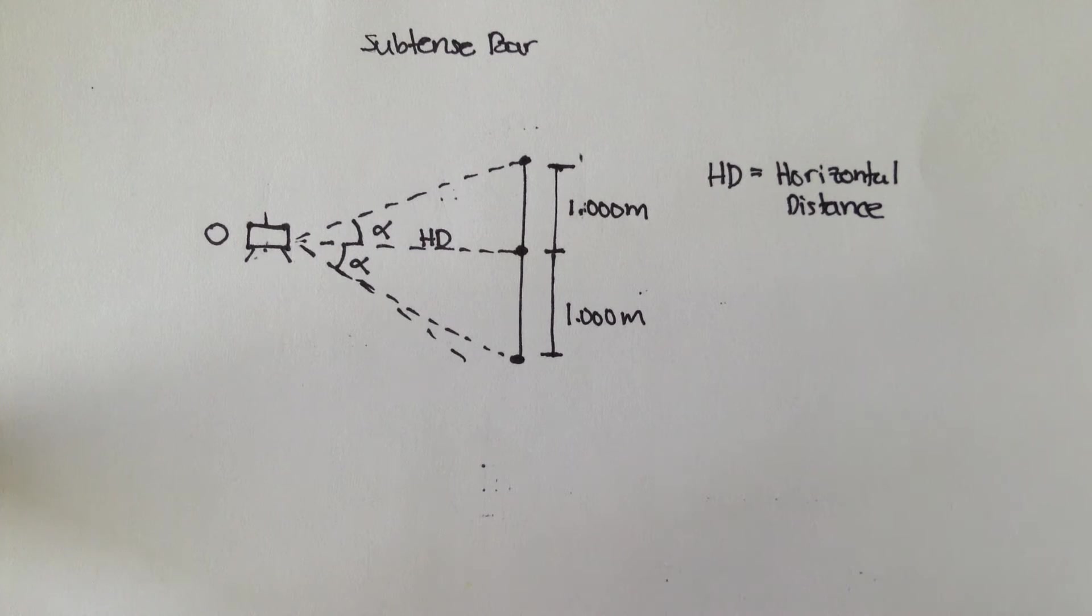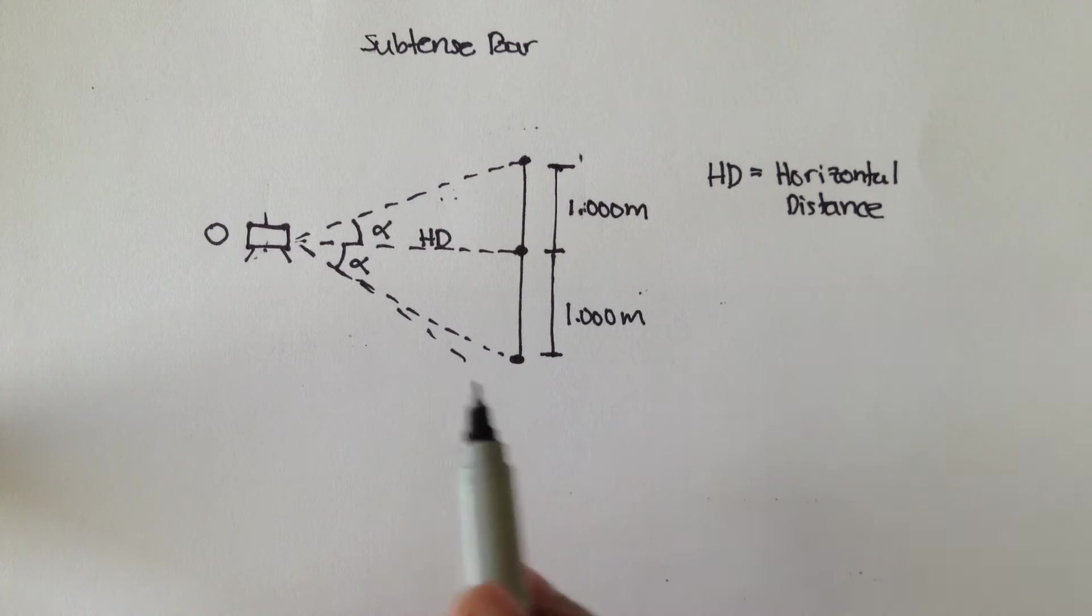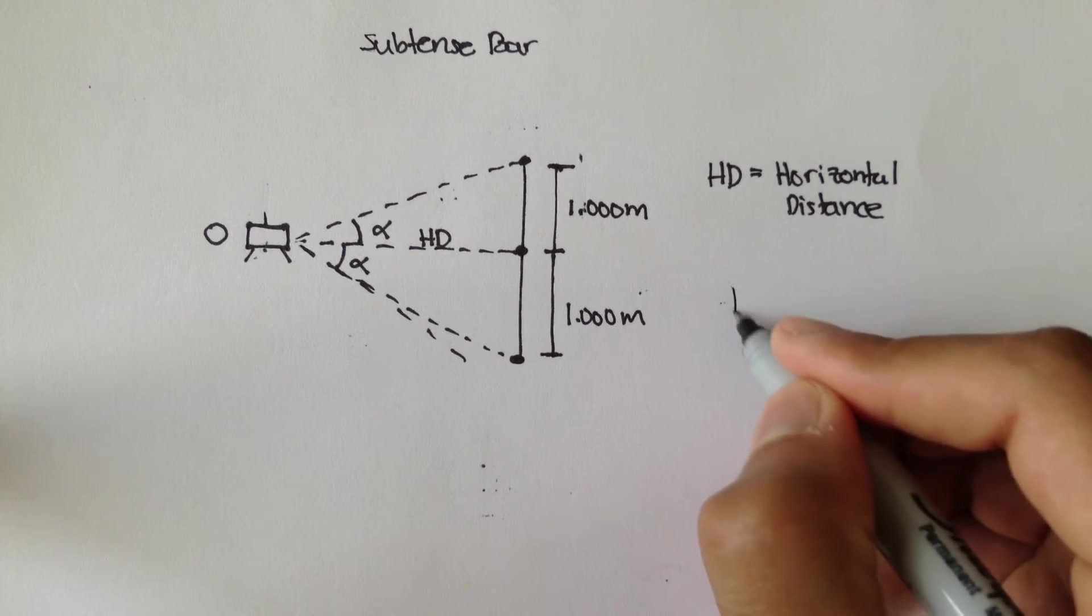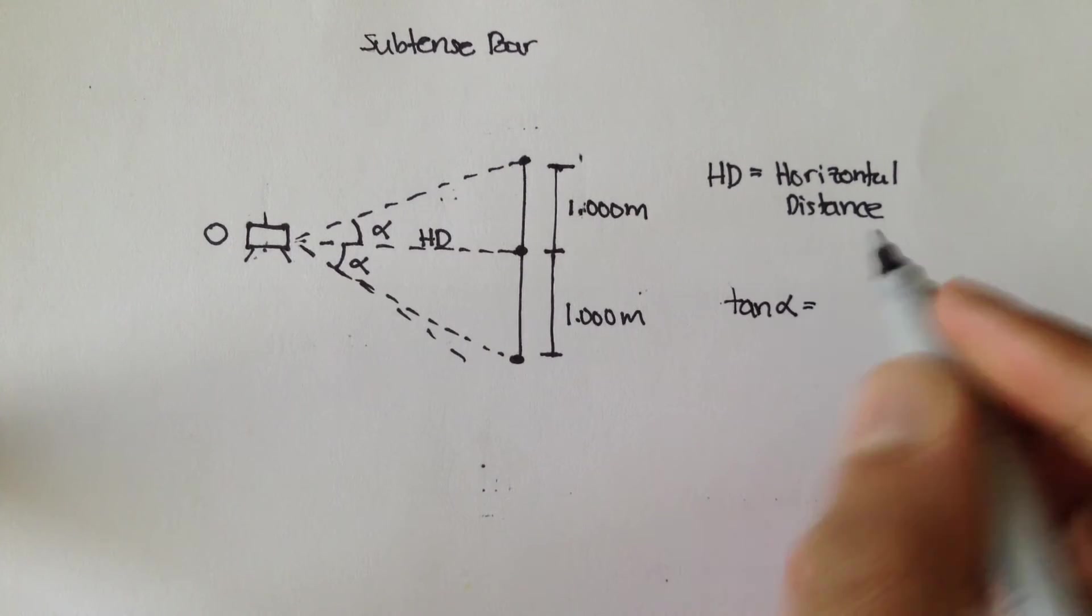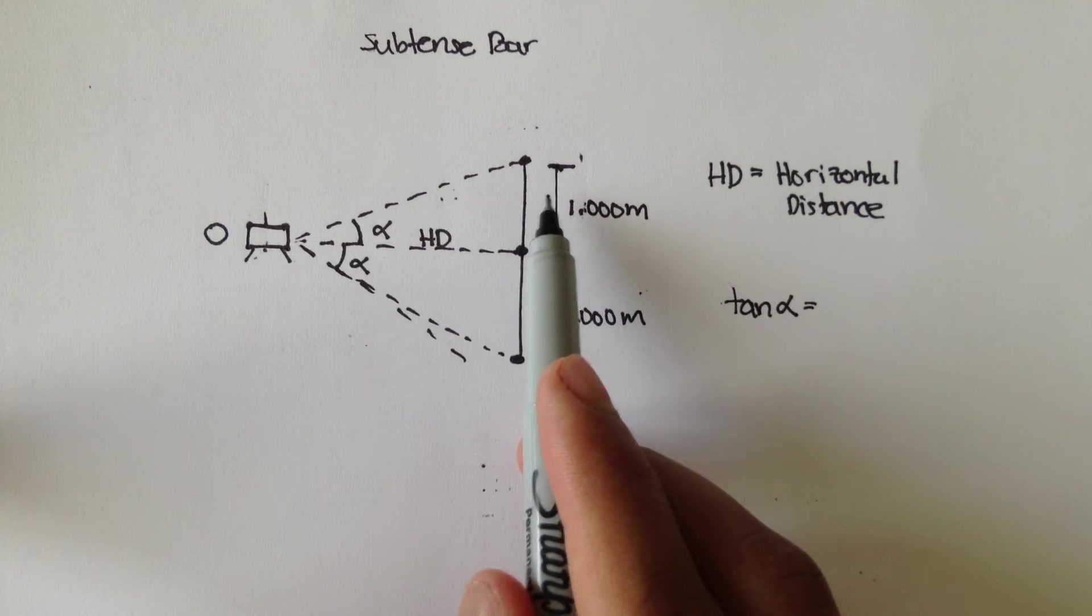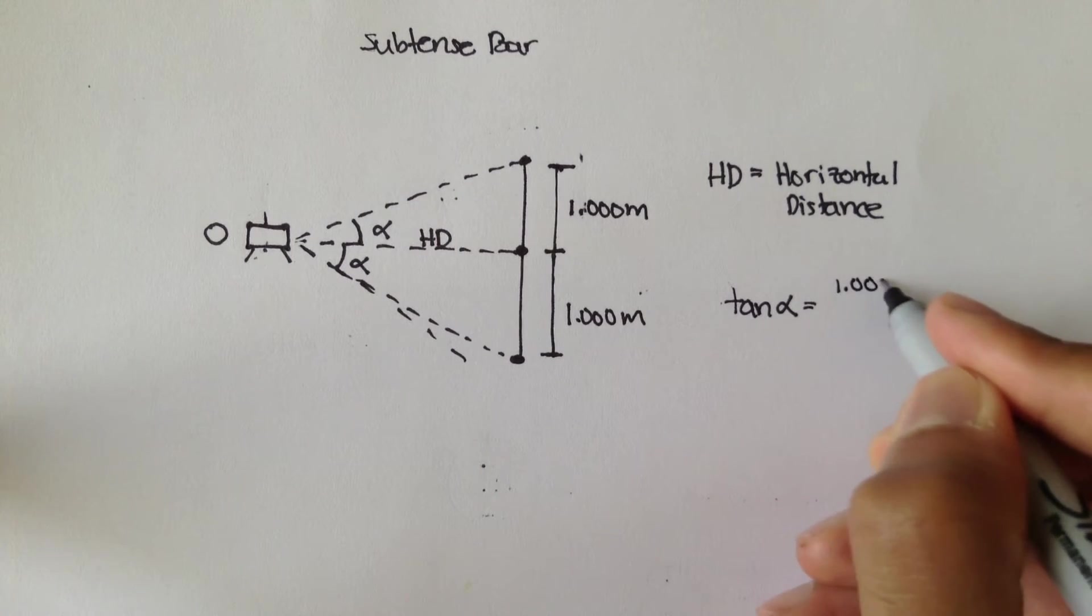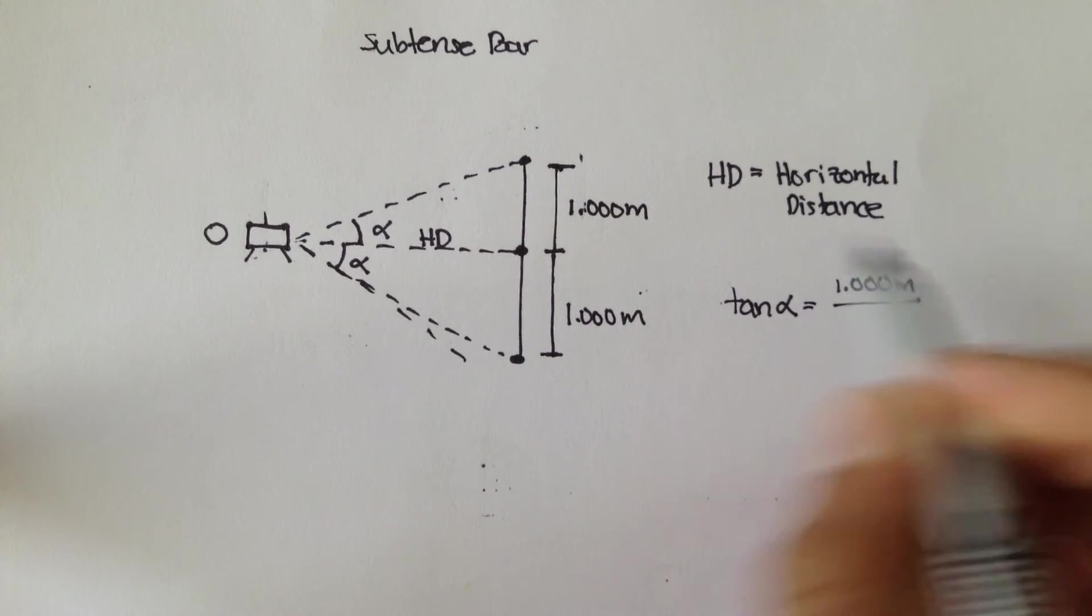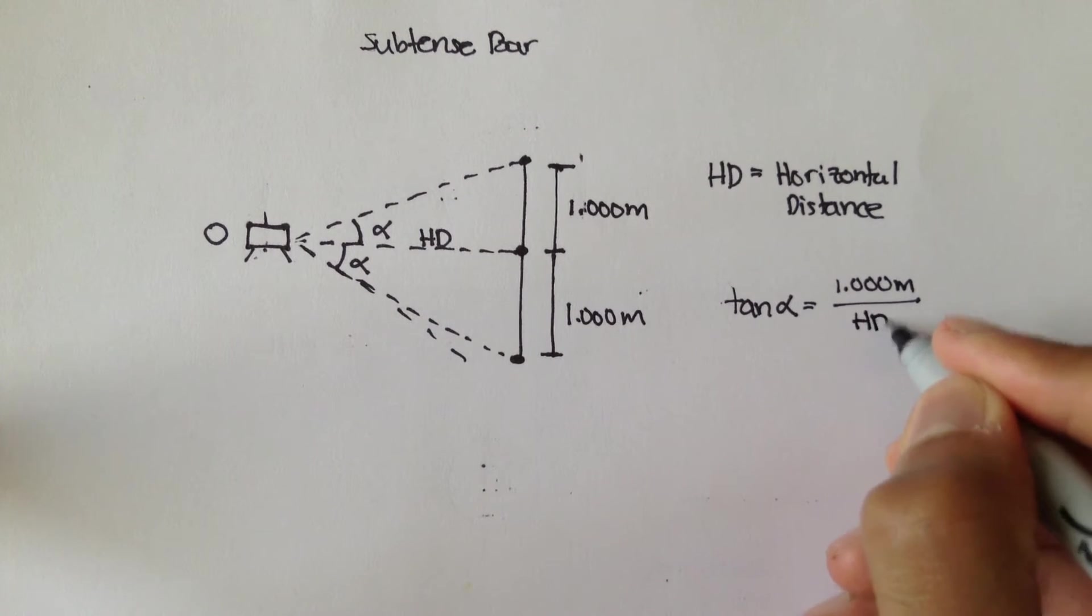And we can figure out what the approximate horizontal distance is by just trigonometry. So if I said the tangent of this angle alpha, tangent is equal to, you remember from trig, it's equal to opposite over adjacent, so it's 1.000 meters over adjacent, and adjacent is HD, is what you're trying to find, the horizontal distance.